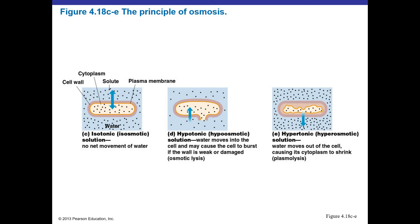Plasmolysis doesn't necessarily kill the cell — if it quickly returns to isotonic conditions, it may be able to rehydrate. But high salt or high sugar will definitely inhibit the cell's metabolism. In contrast, a hypotonic environment is usually lethal to the cell.